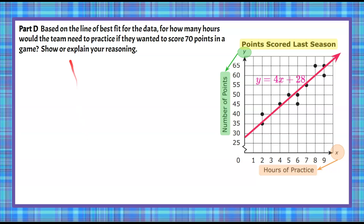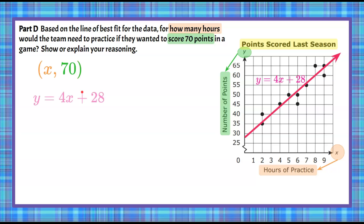Here's Part D: Based on the line of fit, how many hours would the team need to practice if they wanted to score 70 points in a game? Welcome back. We don't know the number of hours, but the desired points is 70. Using the graph, we go up to 70 and across to our line of fit — we can see it's off the graph but just above 10 hours. So let's use our line of fit equation to get the exact answer.